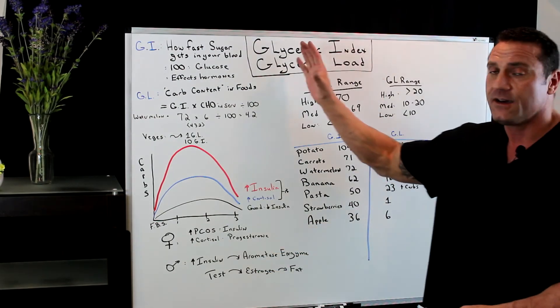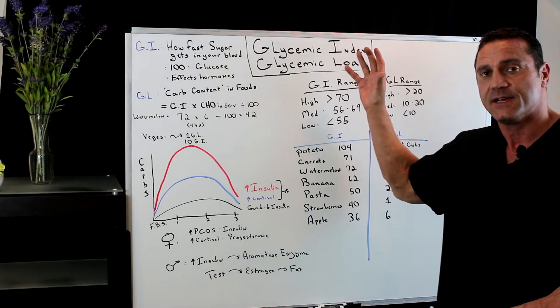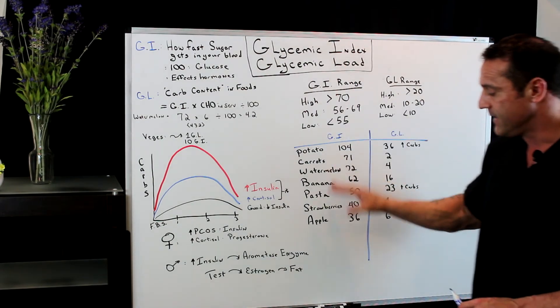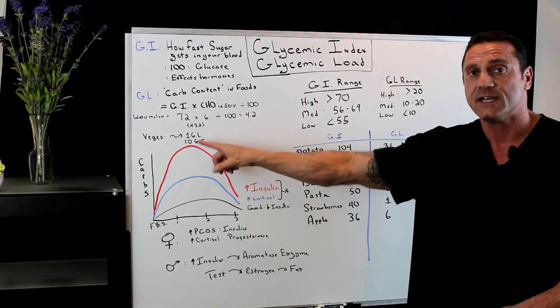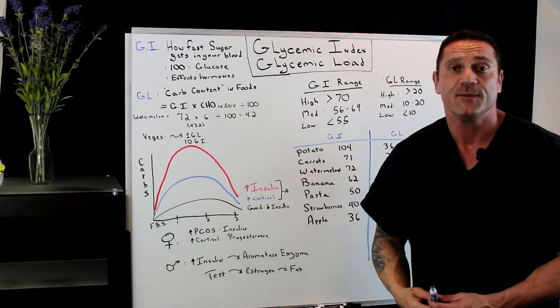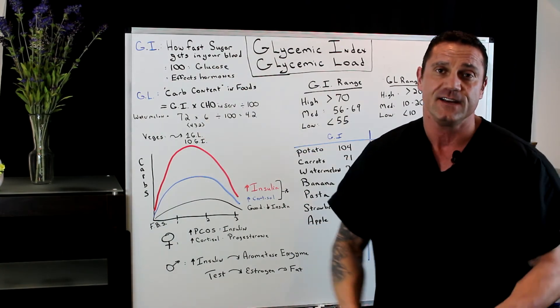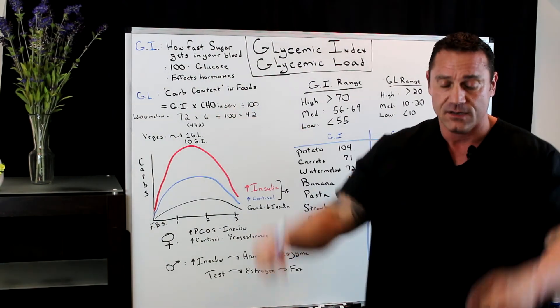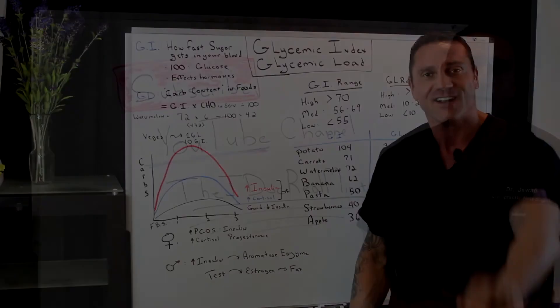In order to be healthy, understand the glycemic index and the glycemic load. Best bet, vegetables always have a low glycemic index and a low glycemic load. Hope you enjoyed the video. Please share it with a friend. Please hit the like button down below and I'll see you in the next one. Take care.